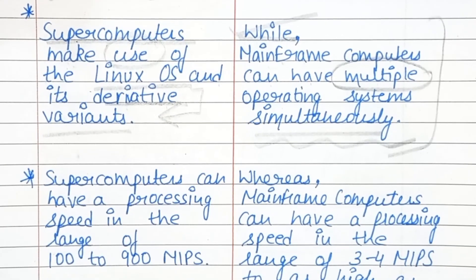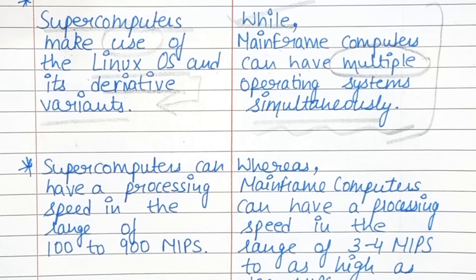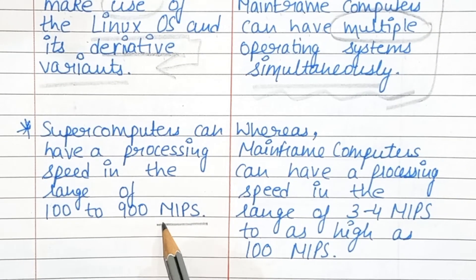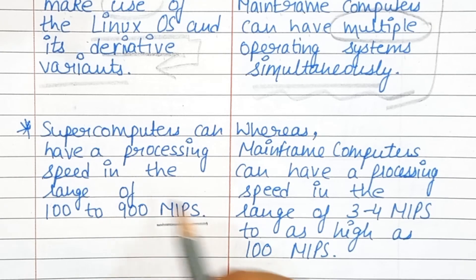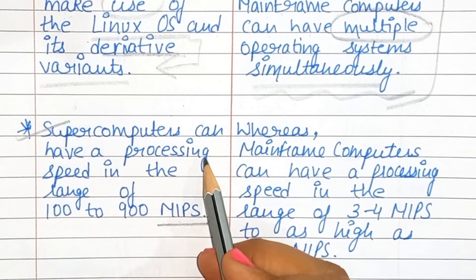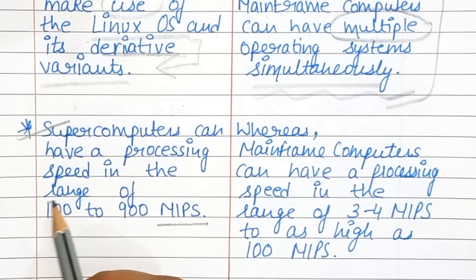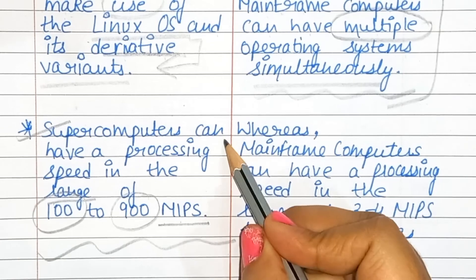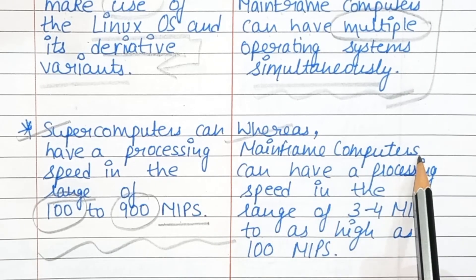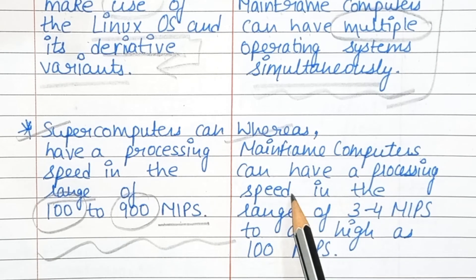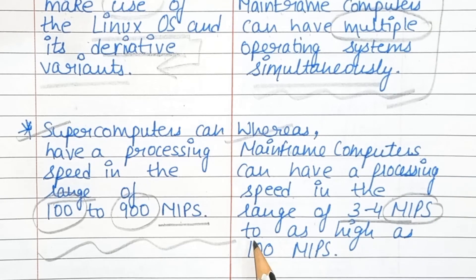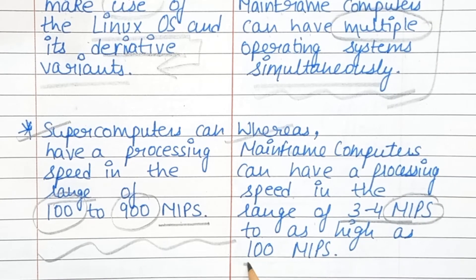Supercomputers can have a processing speed in the range of 100 to 900 MIPS, whereas mainframe computers can have a processing speed in the range of 3 to 4 MIPS up to as high as 100 MIPS.